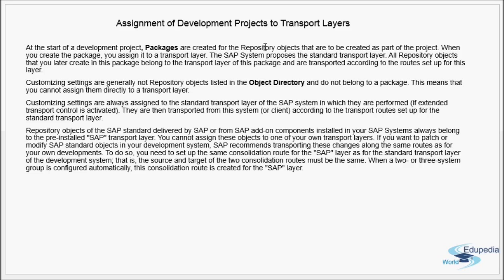The SAP system proposes the standard transport layer. All repository objects that you create in this package belong to the transport layer of that package and are transported according to the routes set up for this layer. The SAP system says: create a standard transport layer, assign all new developments in the repository area to this package, and assign the package to the standard transport layer.